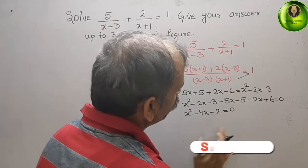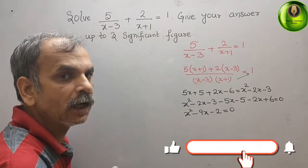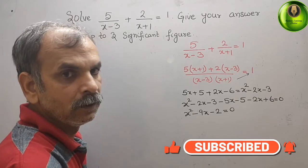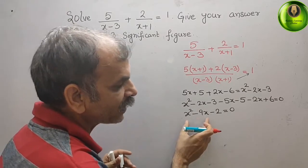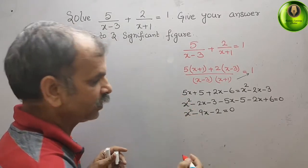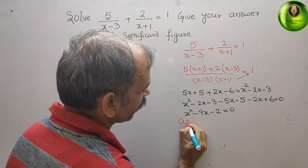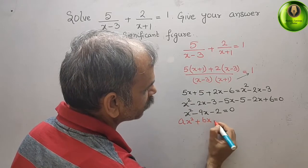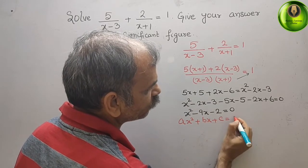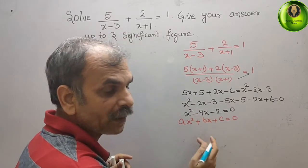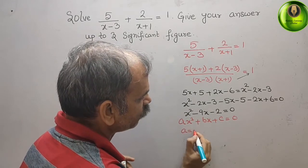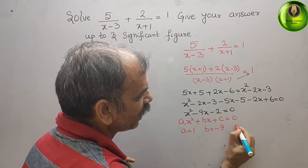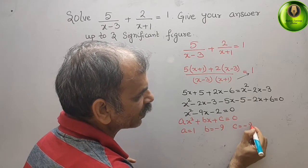We will use the quadratic formula. The standard quadratic equation is ax² + bx + c = 0. Comparing, we get: a = 1, b = -9, and c = -2.